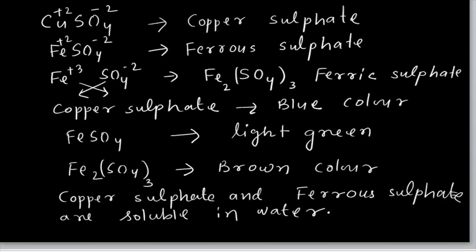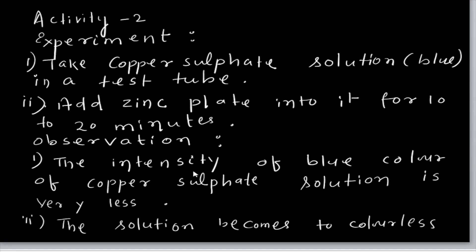Now the formula: copper sulphate is Cu²⁺ SO₄²⁻, so the charges cancel to give CuSO₄. Ferrous sulphate similarly: Fe²⁺ SO₄²⁻, the charges cancel to give FeSO₄. Copper sulphate is blue, ferrous sulphate is light green, and the copper metal deposited is brown. Both copper sulphate and ferrous sulphate are soluble in water.